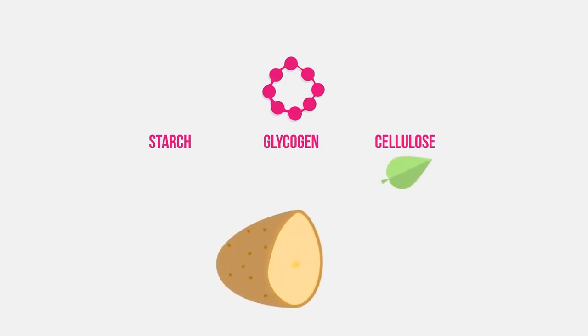Cellulose is found in plant walls and starch is the storage unit for surplus glucose made in photosynthesis. Glycogen is the storage unit used by animals for surplus glucose and is found in the liver and muscle tissues.